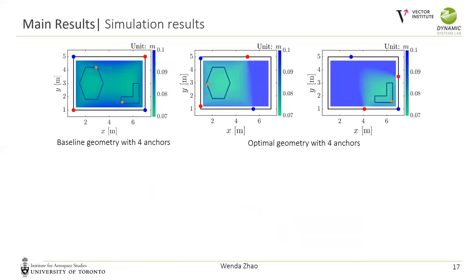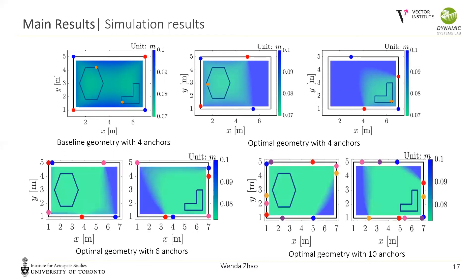In simulation, we first tested localization performance with two pairs of anchors. The baseline placement is selected at the corners of the room. Two regions of interest are tested, with the orange point indicating the worst localization performance. The heat map shows that both regions of interest have better localization performance under the optimal anchor geometry. We also tested the algorithm with six and ten anchors; the system provides better performance as more anchors are available, but the optimization requires more iterations to converge.